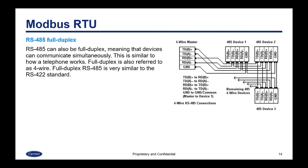RS-485 can also be full duplex, meaning that devices can communicate simultaneously. This is similar to how a telephone works, where two parties can talk at the same time. Full duplex is also referred to as four wire. Full duplex RS-485 is very similar to the RS-422 standard, and the way it works is that the extra pair of wires allows simultaneous communication.